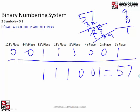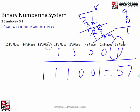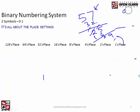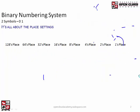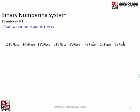We know this is right a couple of ways. One is the 1's place is set and we do have an odd number, so that checks out. We're only doing 8 bits. If you have to convert a larger number, of course, you'd move over to a few more place settings. But we're keeping it to 8 bits only.